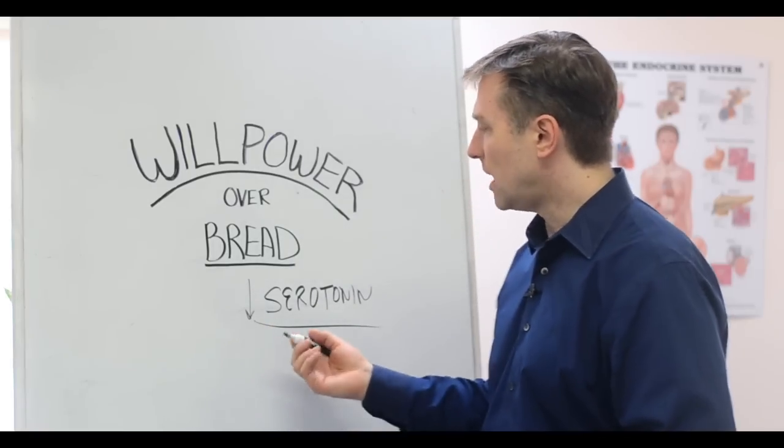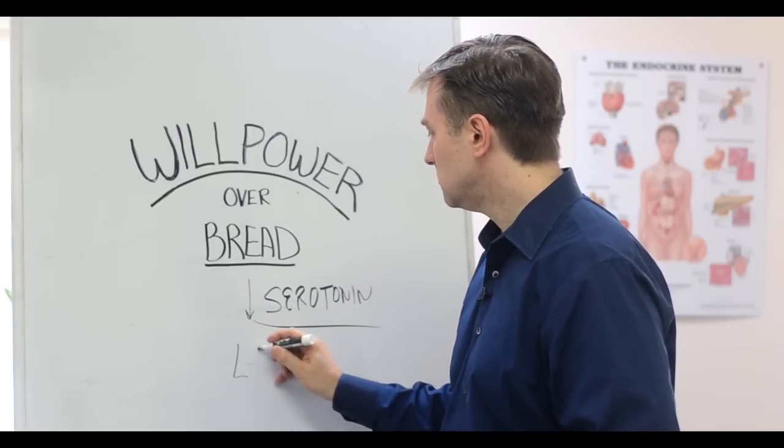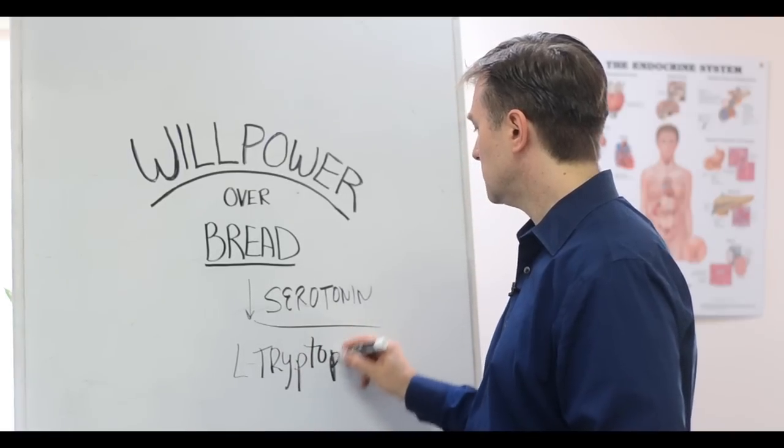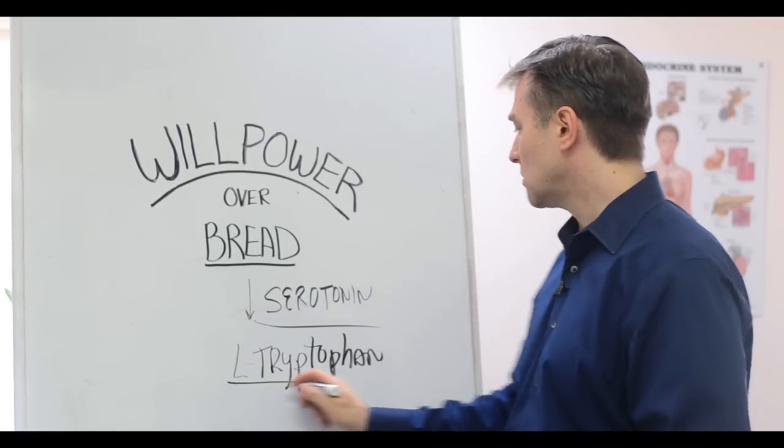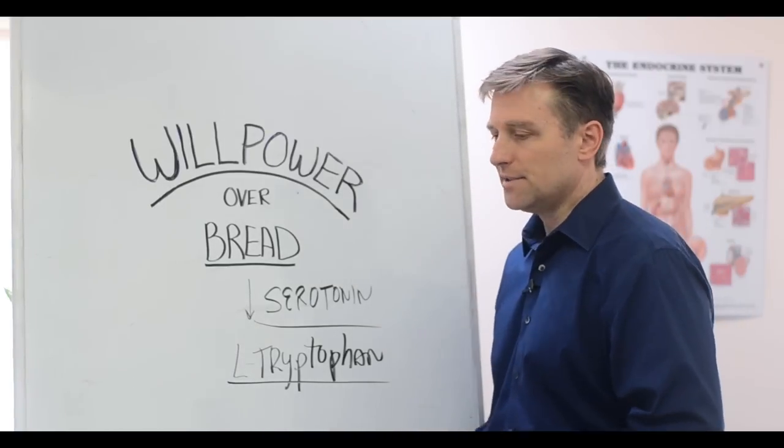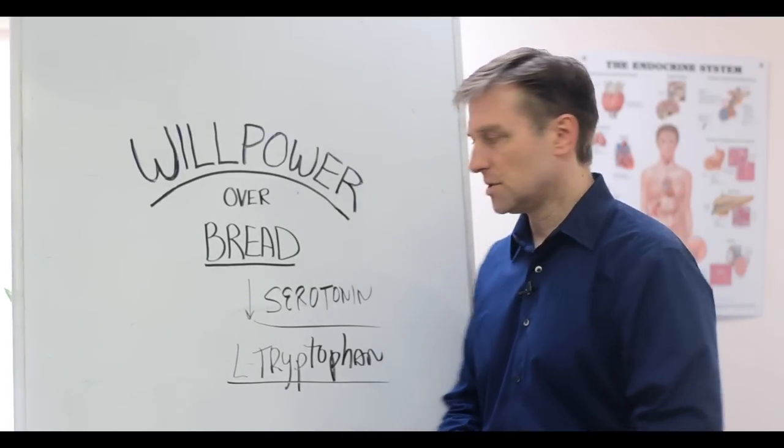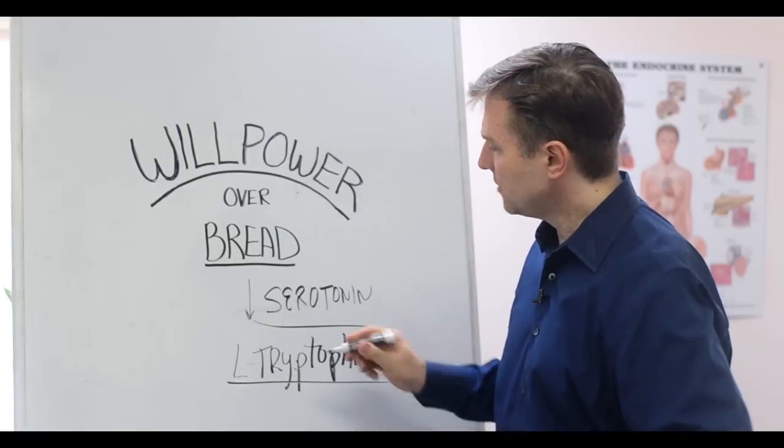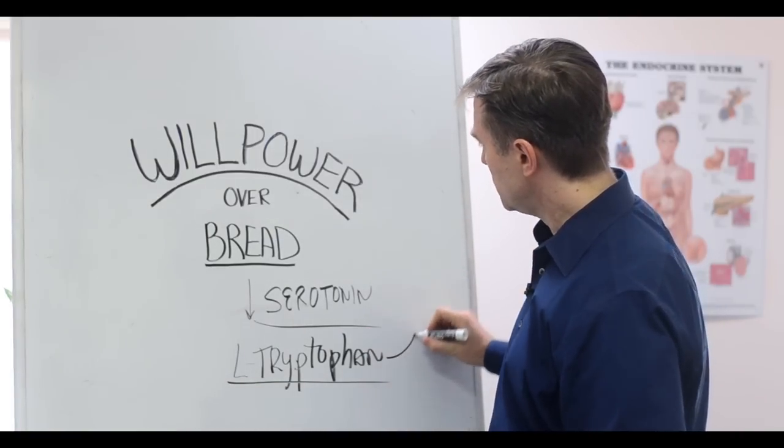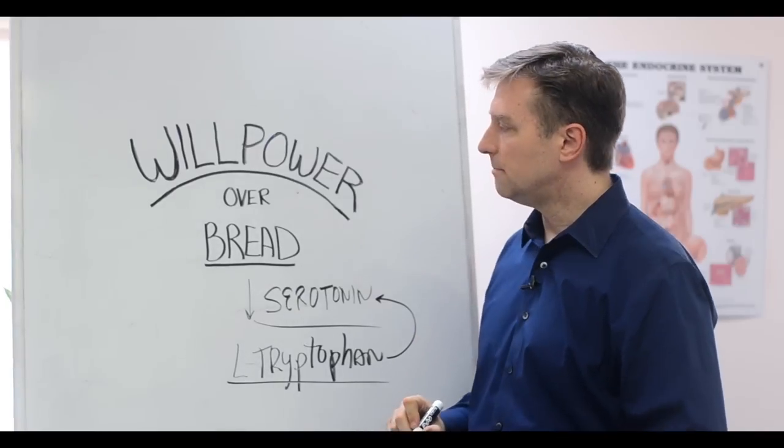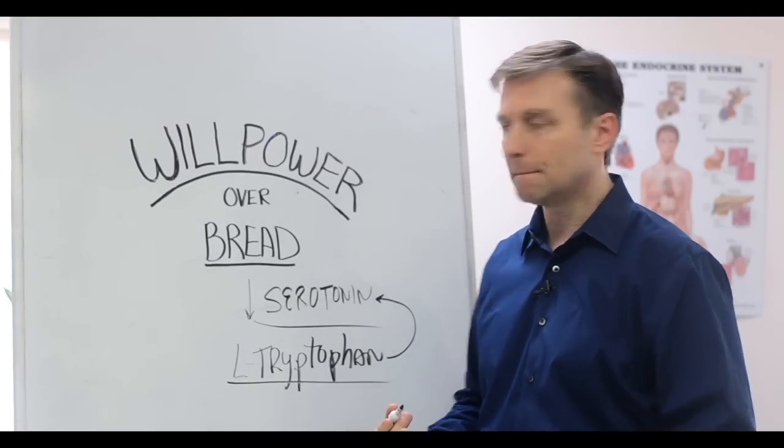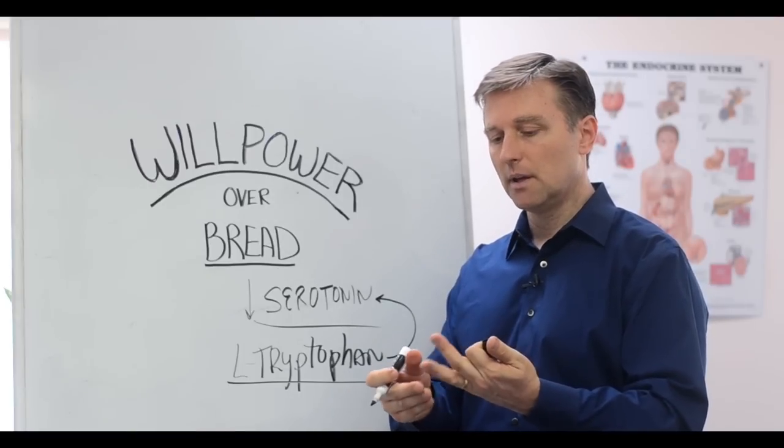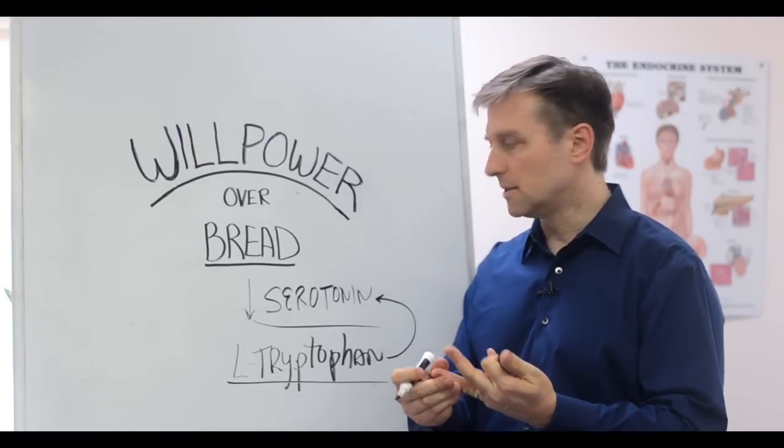So there is a natural remedy called L-tryptophan that you can get at the health food store. You have other precursors too, like 5-HTP and all that, but L-tryptophan seems to work the best. L-tryptophan turns into serotonin, and you would want to take it before you go to bed because it also helps you sleep. Serotonin is a sleeping hormone, so it really is good for chocolate cravings, sleep, anxiety, and depression.